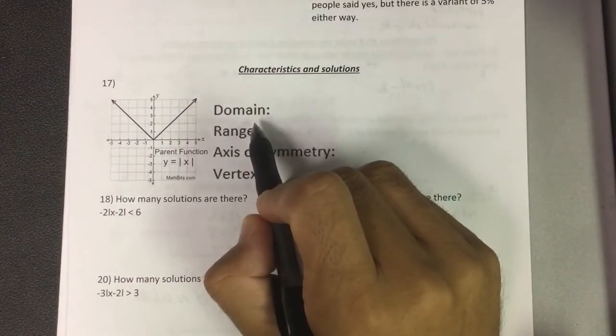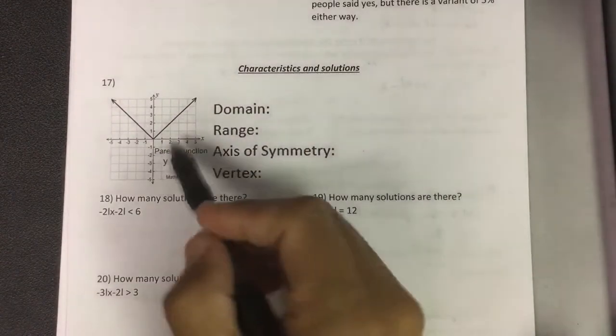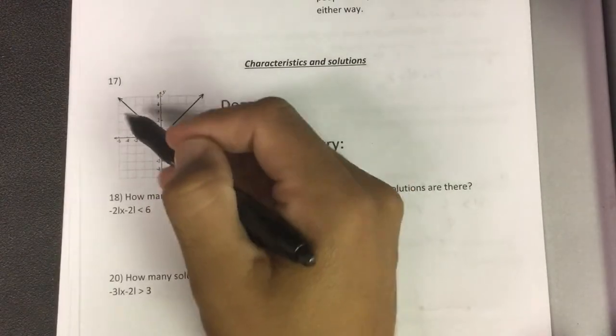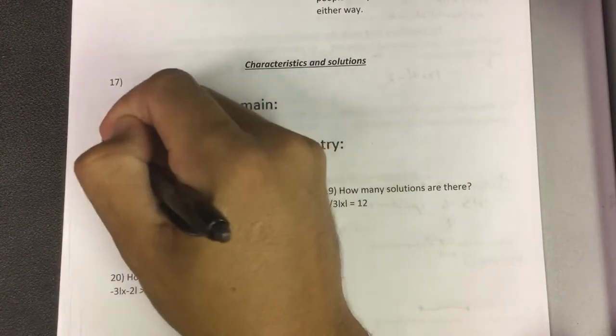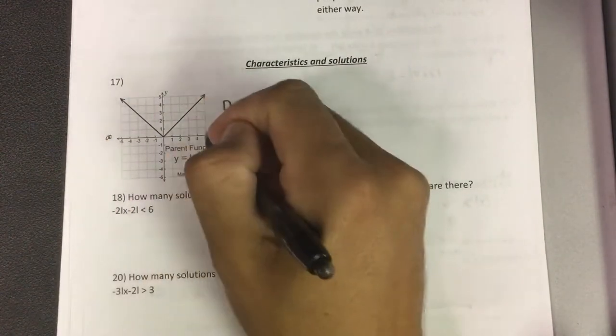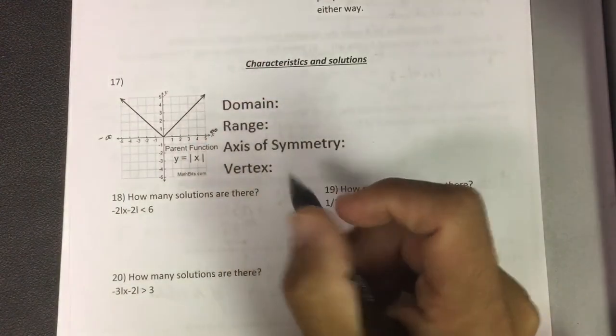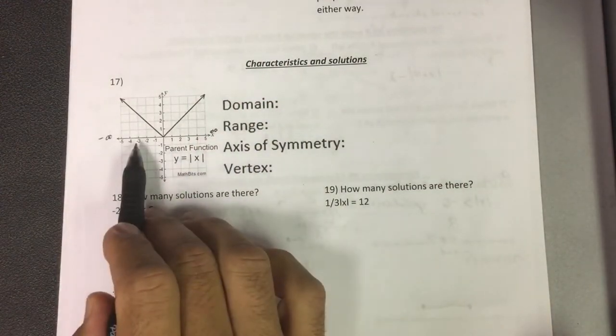Domain and range. The domain is the numbers going left to right. So how far does this go left? Since it has an arrow pointing left, this goes all the way to infinity. And it has an arrow pointing right, it goes, I'm sorry, negative infinity, and goes up to infinity on the x-axis.